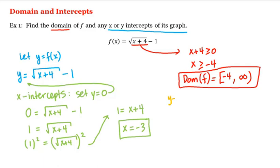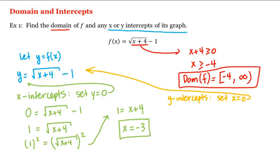What about the y-intercepts? A y-intercept, if it exists, is the y-coordinate of a point where the graph of f intersects the y-axis. On the y-axis, x equals 0, so we set x equal to 0 in our equation and solve for y. We have y is equal to the square root of 0 plus 4 minus 1, or y is equal to 2 minus 1, or y is equal to 1, which is the y-intercept of the graph of this function.